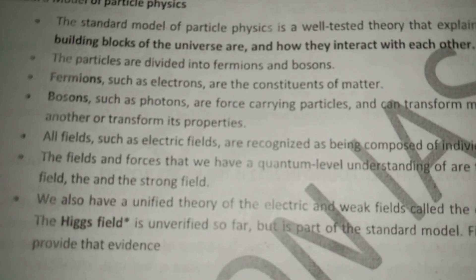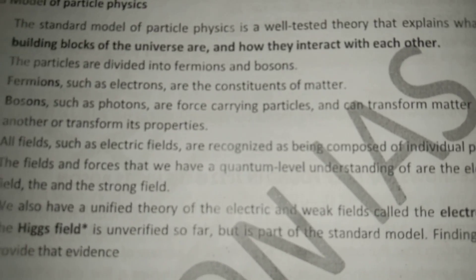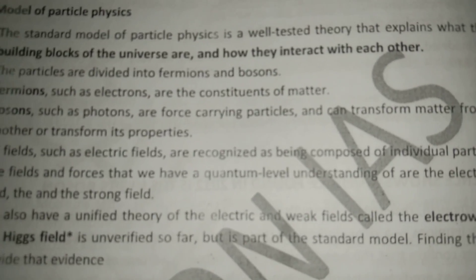Matter can be transformed from one particle to another. Fermions and bosons are different — fermions such as the electron are constituents of matter, while bosons such as the photon are force-carrying particles. Bosons have a force-carrying role which can transform matter from one particle to another of its property.